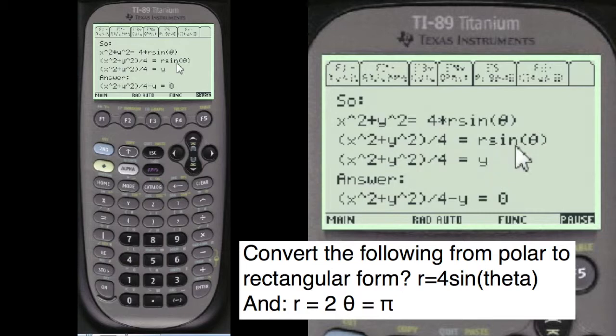We come up with this. And this, of course, equals y. Kind of an identity too, but that's one of the rules here in polar to rectangular. And so then we transpose the y over to the left side and make this equal to 0. And here's the answer: x squared plus y squared divided by 4 minus y equals 0.